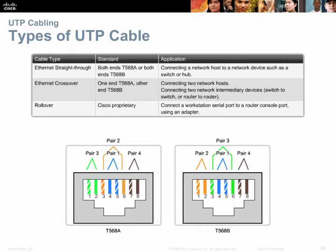The types of UTP cable: a straight-through cable is used for the typical 90-plus percent of cabling, connecting an end device to a switch. A crossover cable is a specialty cable used when you need to interconnect two like devices, such as router to router, PC to PC, or switch to switch. A rollover cable is a proprietary cable for providing keyboard and video controls to a remote device like a Cisco router or switch.